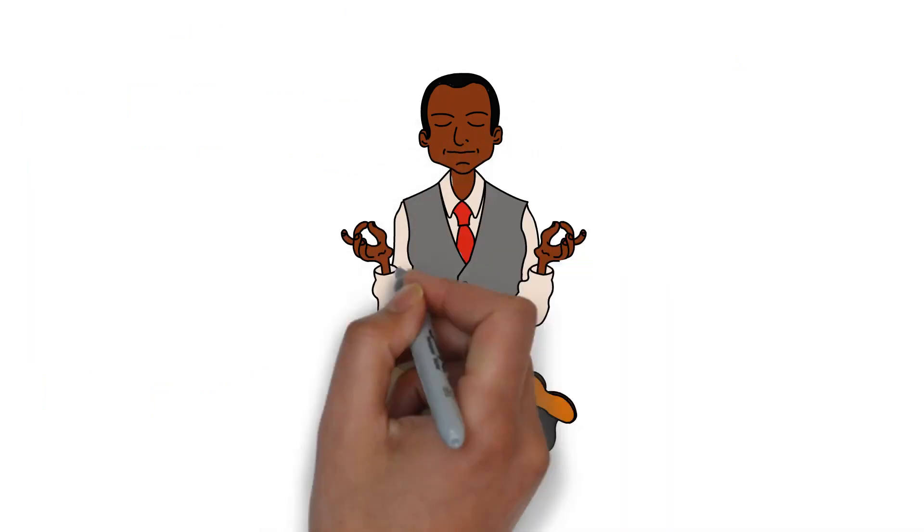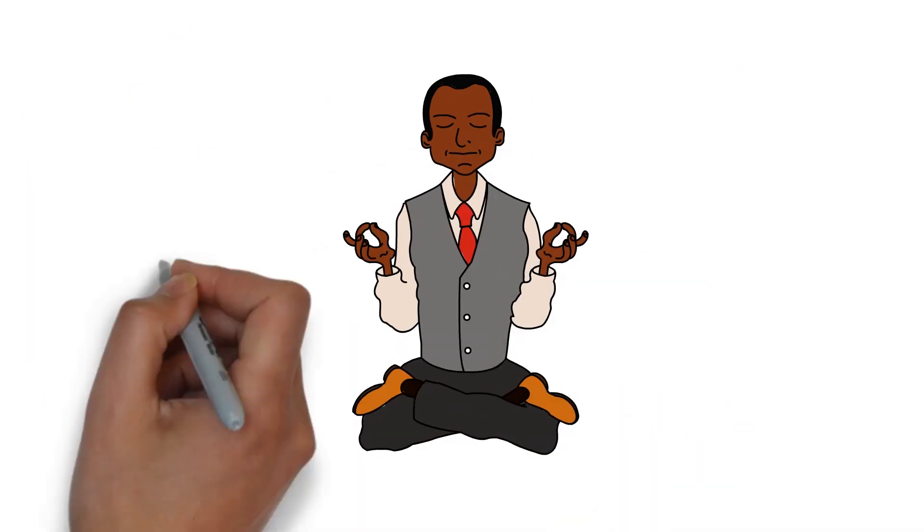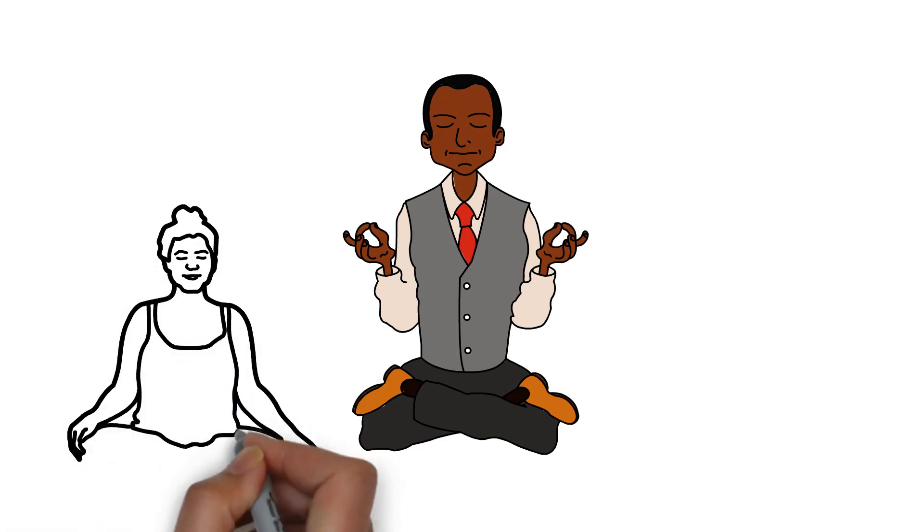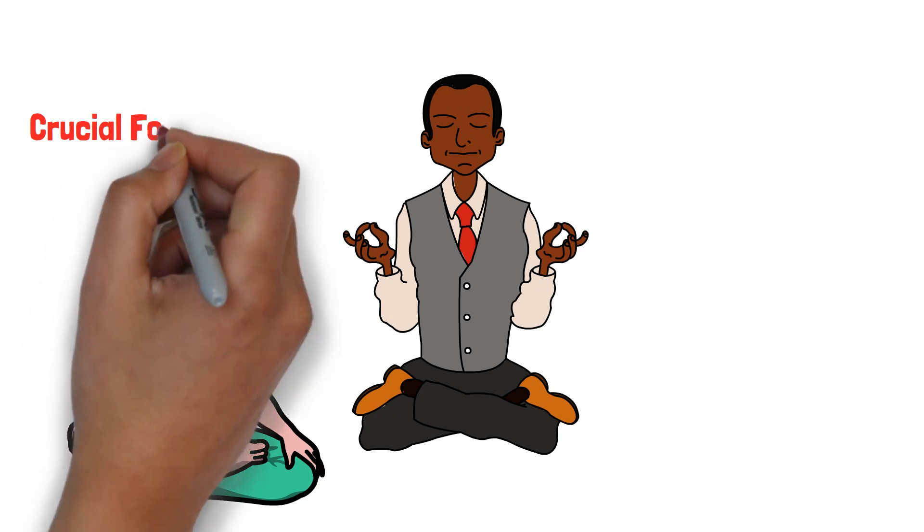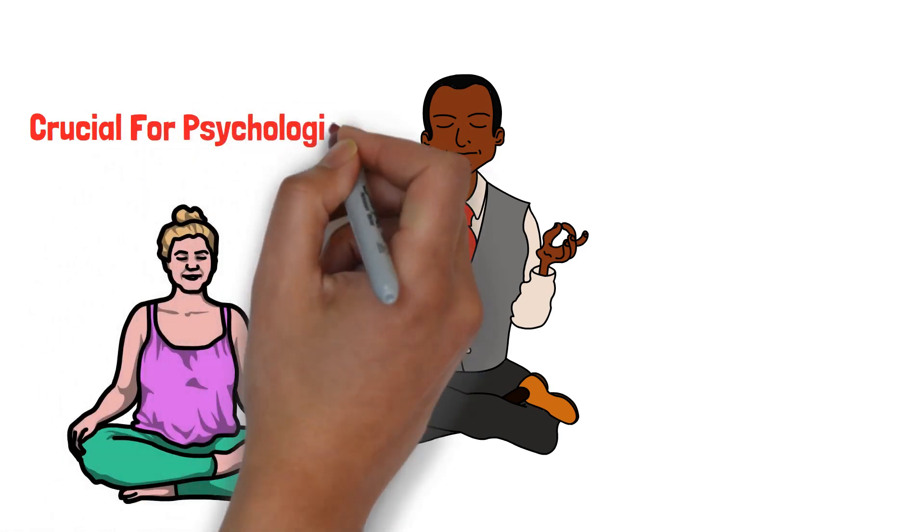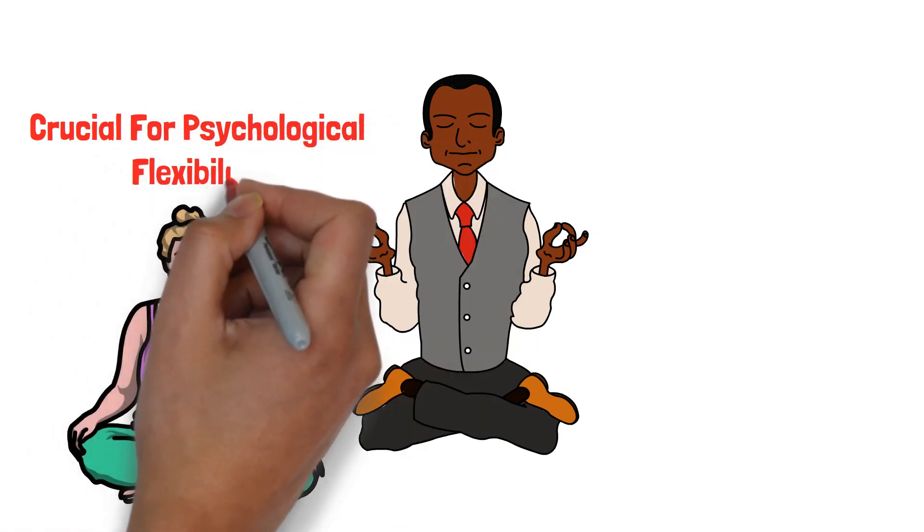For example, try mindfulness meditation. Spend a few minutes each day sitting quietly, focusing on your breath and observing your thoughts and sensations without attachment. This helps cultivate an open and accepting mind state, which is crucial for psychological flexibility.